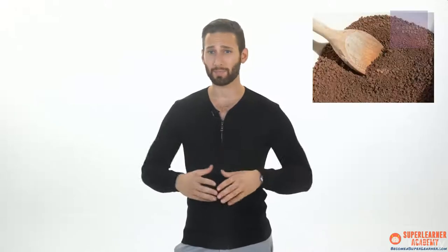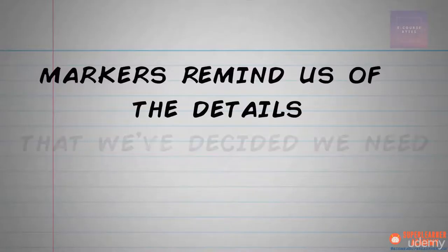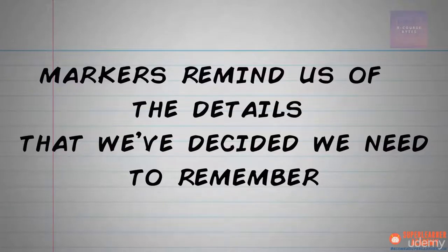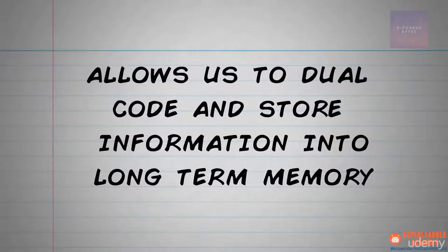But if you read about, say, chocolate, and you can conjure up the smell or the taste of chocolate, that's actually a great marker for remembering that data point. Whatever types of markers we use — whether they're visual or sensory, or some other types we have yet to learn about — it'll almost certainly be a mix in the end. This mix of markers, when retrieved and reviewed, reminds us of the details we've decided we need to remember. And when combined with our existing knowledge, opinions, and ideas about the content, it allows us to dual code and store information into long-term memory very quickly and effectively.